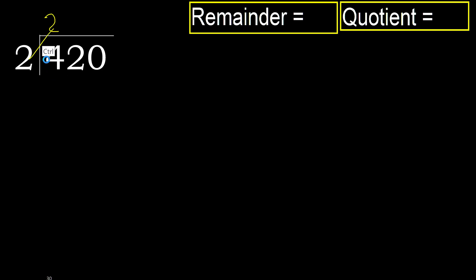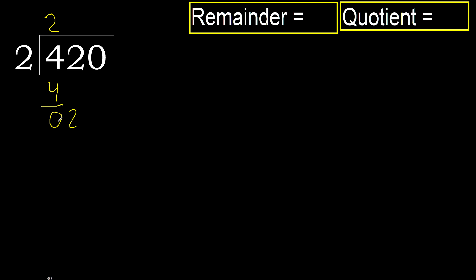Multiply by 2 is 4. 4 is not greater. 4 minus 4 is 0. Next — eliminate 0 on this side.